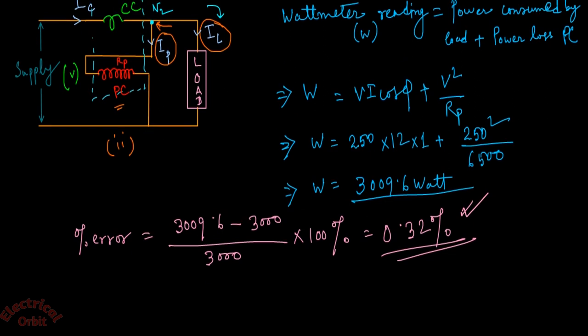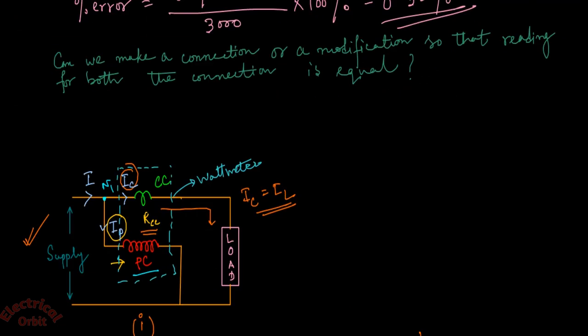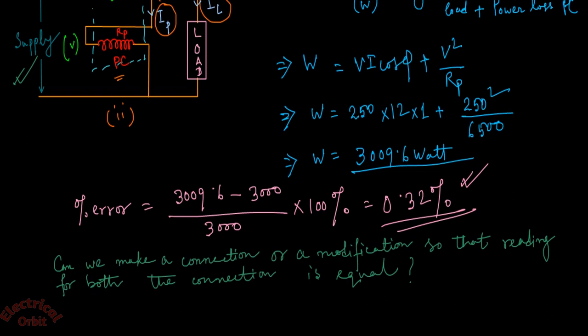Now I'm asking you a question: can we make a modification to these two types of connections — Figure 1 and Figure 2 — so that the reading for both conditions is equal? Mention your answer in the comment section below. Thank you.